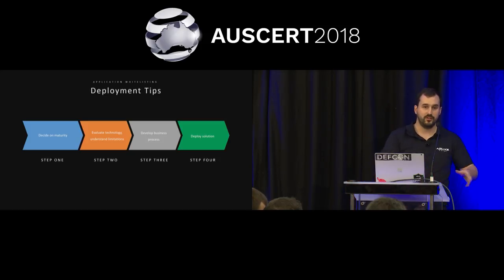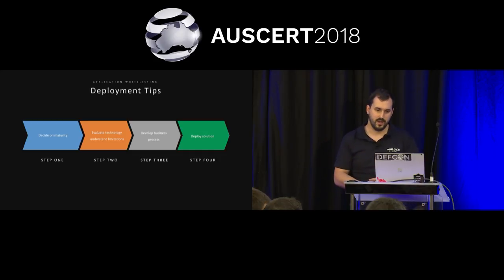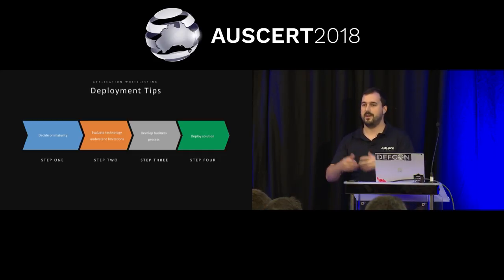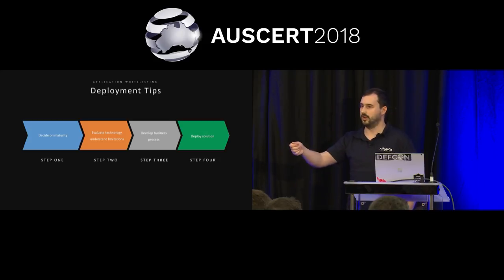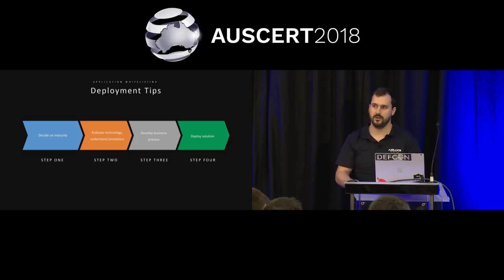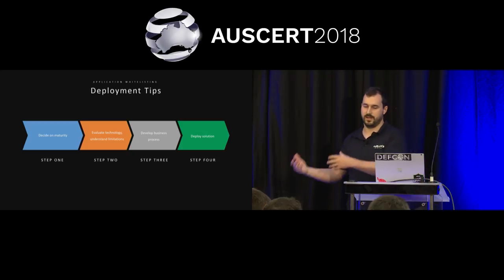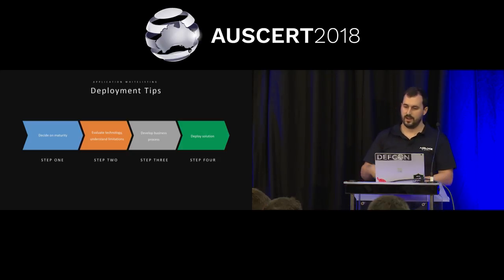Once you've evaluated the technology and understood any limitations, it's about developing those business processes. Map out scenarios — say, when a user brings in a new piece of software unknown to you, how are you going to deal with that? Allow the user to get on with what they need to do, verify it's legitimate, and update your application whitelist. Step four is actually going about deploying that solution.